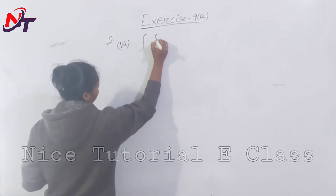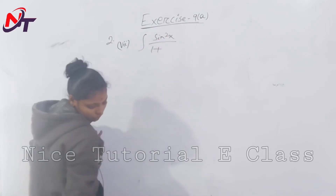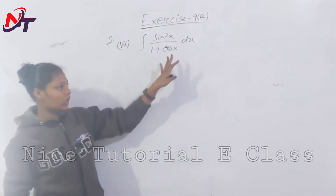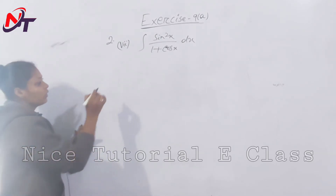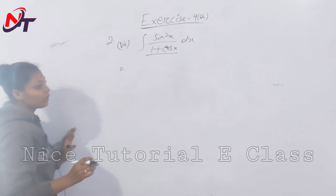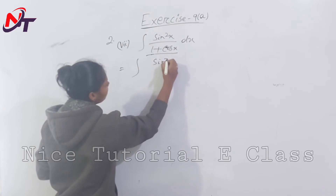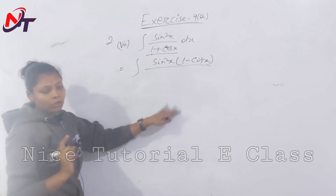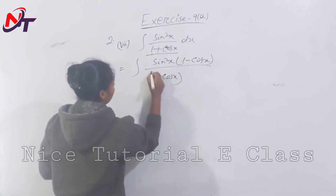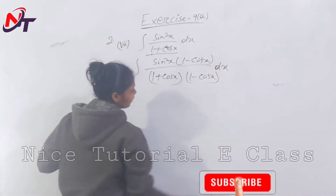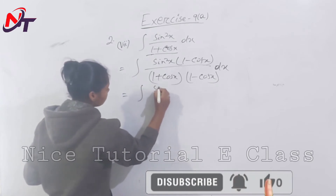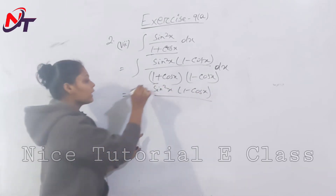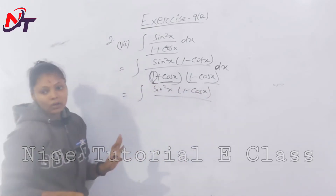Next question: integration of sin square x divided by 1 plus cos x dx. We multiply numerator and denominator by 1 minus cos x, giving sin square x into 1 minus cos x divided by (1 plus cos x)(1 minus cos x).